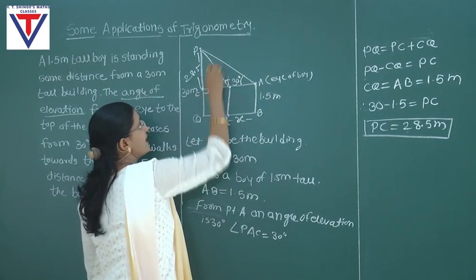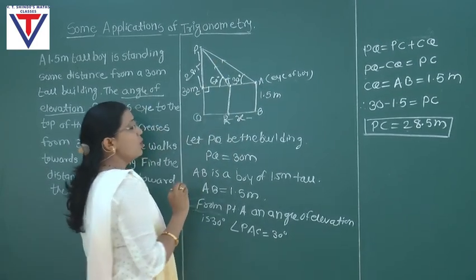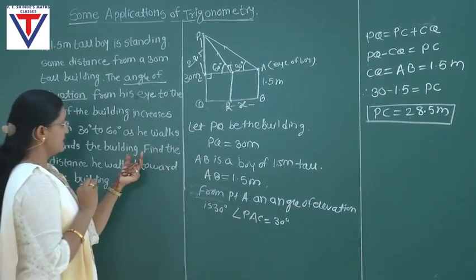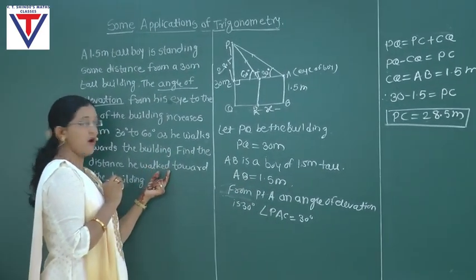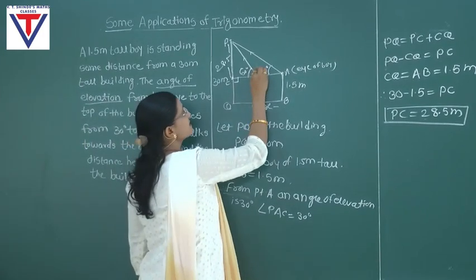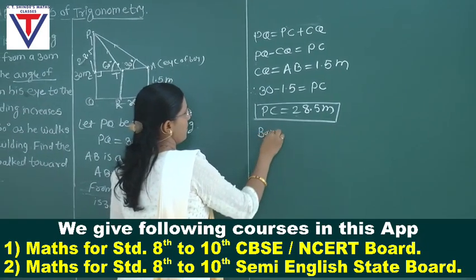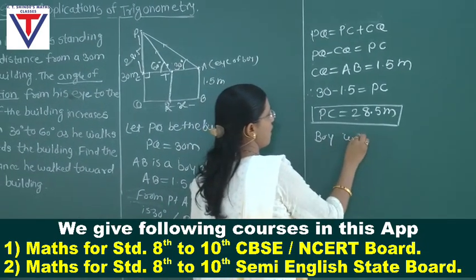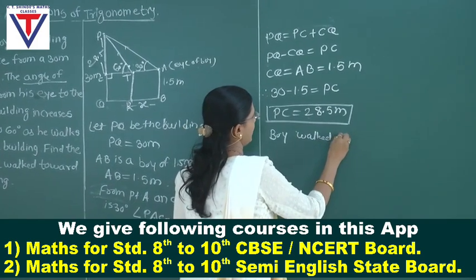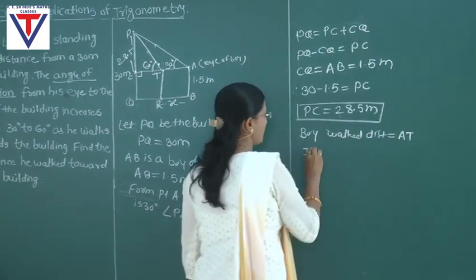This is a horizontal line, this is a line of vision, and this is also a line of vision. Now, we need to find how much distance the boy walked toward the building.